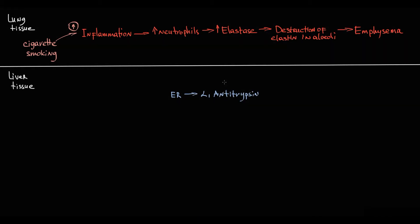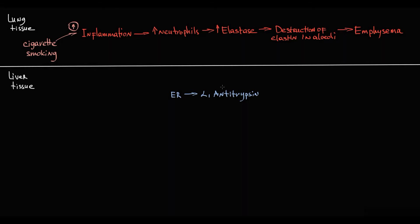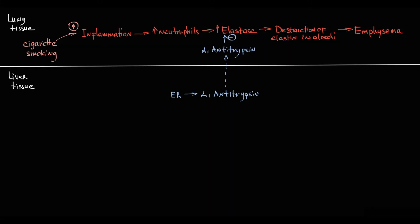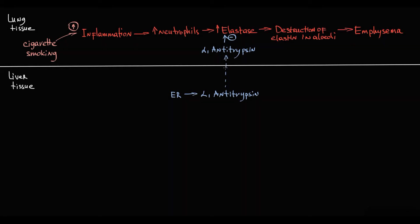This protein is delivered to all tissues, but the major site is the lung tissue. Alpha-1-antitrypsin inhibits proteolytic enzymes like trypsin and elastase, and by this it controls inflammation and prevents damage to alveoli.